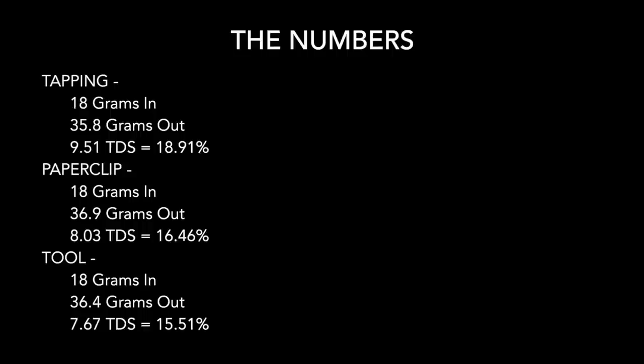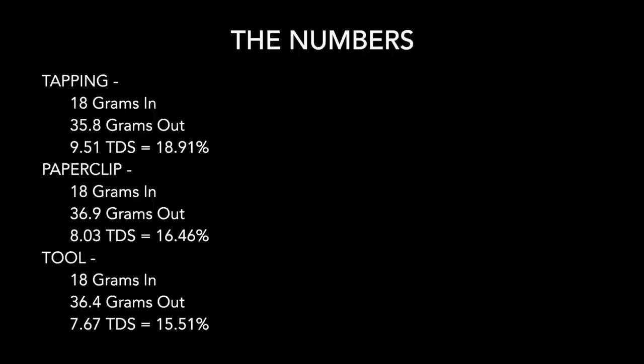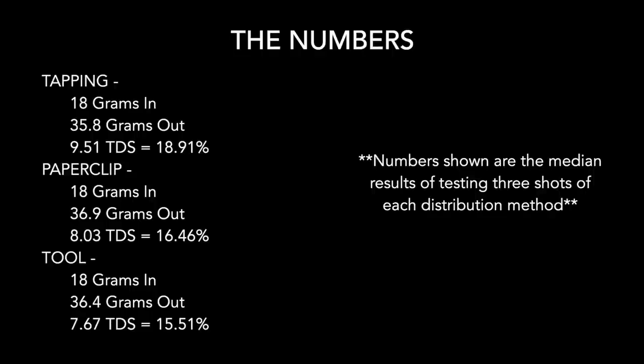Let's talk about the numbers and what they mean. The extraction percentage is way higher with tapping than with the paper clip and the OCD tool — nearly a two-and-a-half percent drop in extraction between tapping and the paper clip, and almost a three-and-a-half percent drop between tapping and the distribution tool. The numbers shown are the median results from testing three shots of each distribution method, which I felt were the most accurate and reliable.